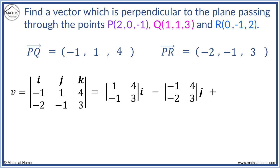Now we add the k component. Covering the k column, we obtain -1, 1, -2, -1.